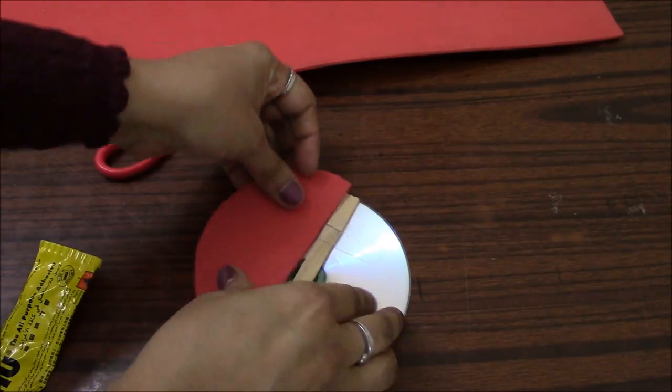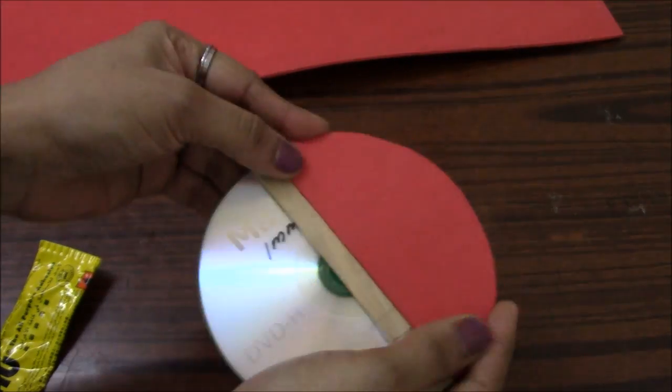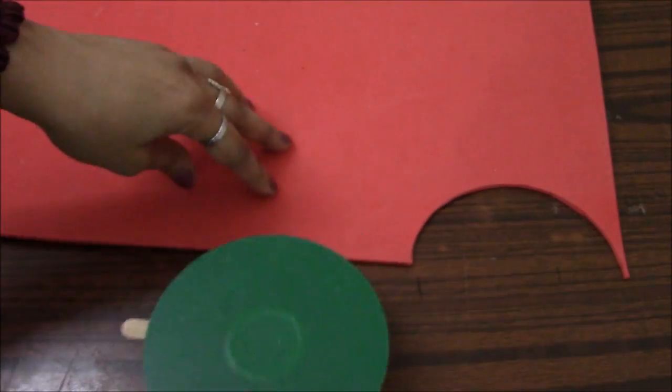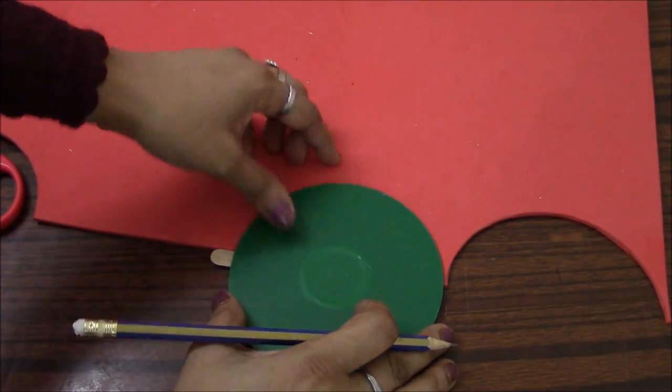You might have noticed that about 1 cm of the ice cream stick that I am using is left out of the CD, whereas the other end is concealed.